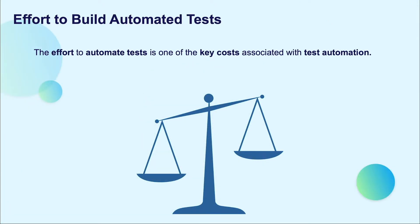Now, we'll come closer to the second external metric, the effort to automate tests, which is one of the key costs associated with test automation. The implementation cost has a positive correlation with the size of test cases — the more test steps conducted, the more expensive the cost will be. While the cost to implement a specific automated test will depend largely on the test itself, other factors such as scripting approaches used, familiarity with the testing tools, the environment, and the skill level of the test automation engineer will also have an impact.